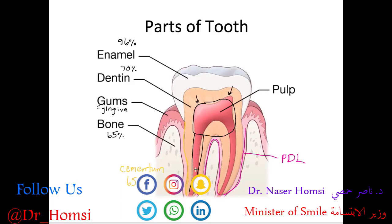Ligaments usually connect bone to bone — like the ACL you hear about in sports — but here the PDL connects a tooth, which is not technically a bone, to the jawbone. To summarize: we have the enamel, dentin, and pulp layers; the gums and bone that support the tooth; the PDL that connects it to the bone; and the cementum layer of the root.